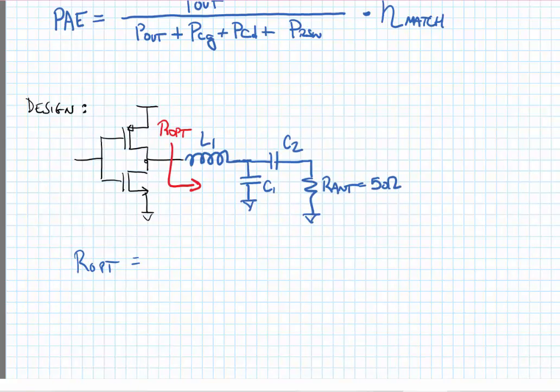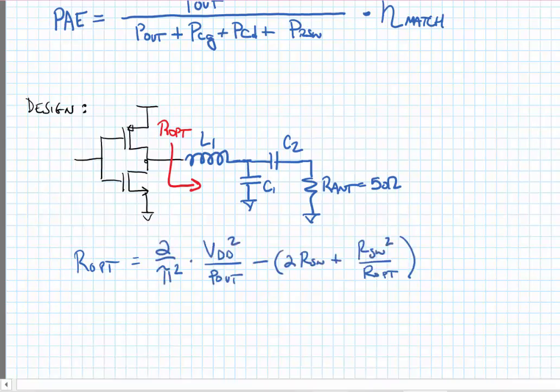Here we've chosen to use a tapped capacitor match in order to transform our antenna of 50 ohms to the optimal termination resistance. The optimal termination resistance is given by the following. Now ideally the switch resistance in the transistors is low enough that the R switch squared over R opt term goes approximately to zero.